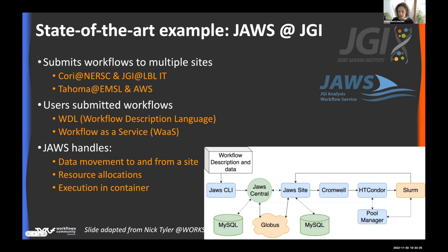We're going to go through a couple of state-of-the-art examples. JAWS is a workflow analysis system where users can bring in their workflows described in a WDL — a workflow description language. JAWS helps users get that workflow running on multiple sites, handling the harder parts like transferring data and allocating resources at each site. Each task is executed inside a container, data is transferred back to the user seamlessly, making it easy to use as a multi-site, cross-facility workflow system.